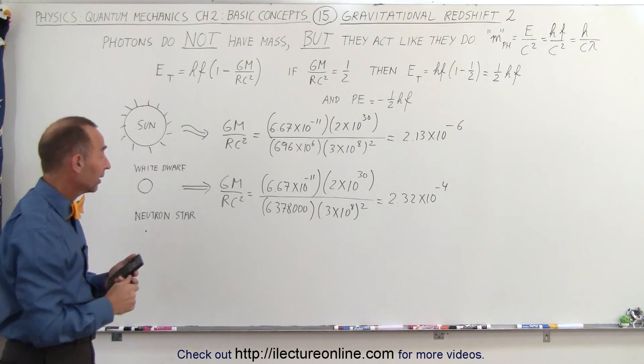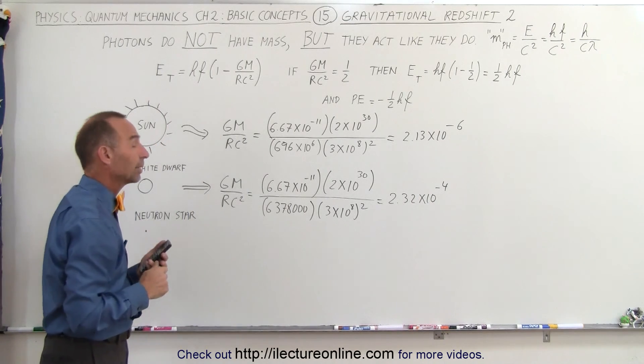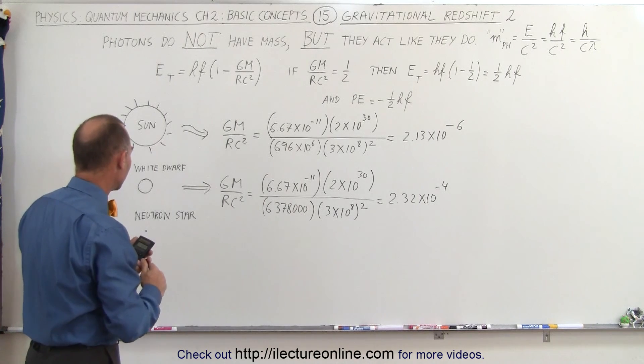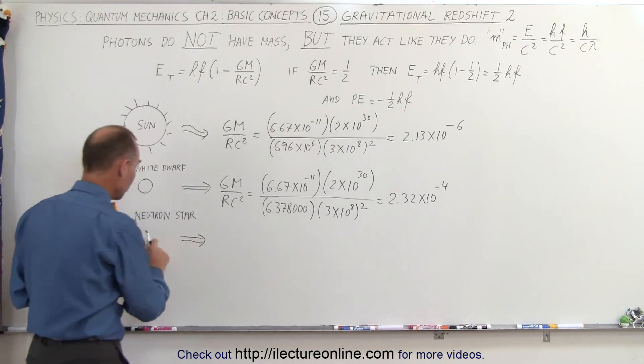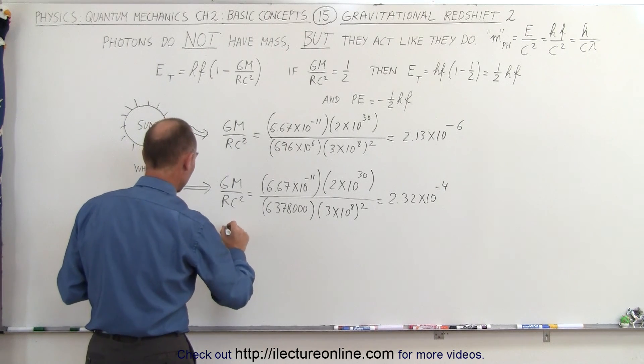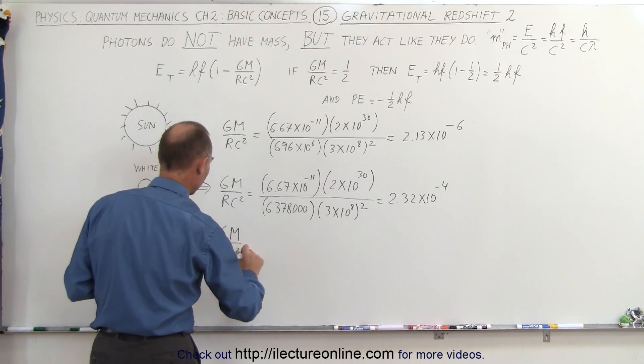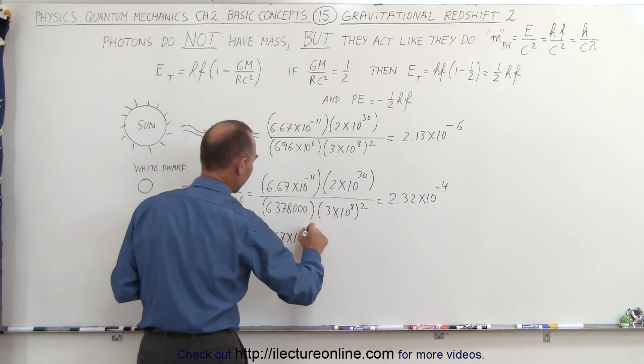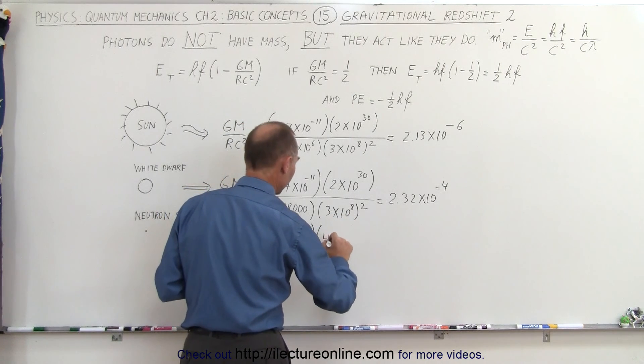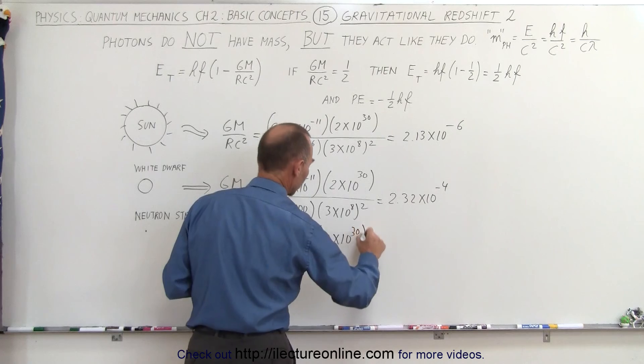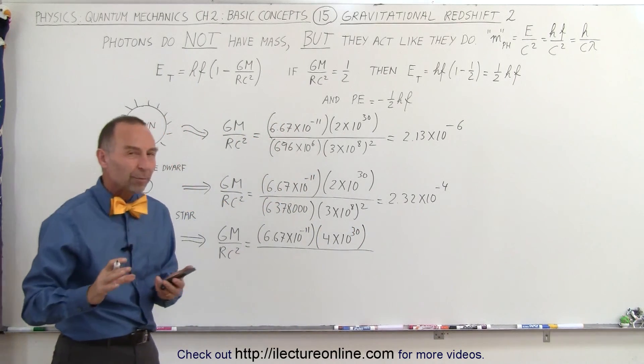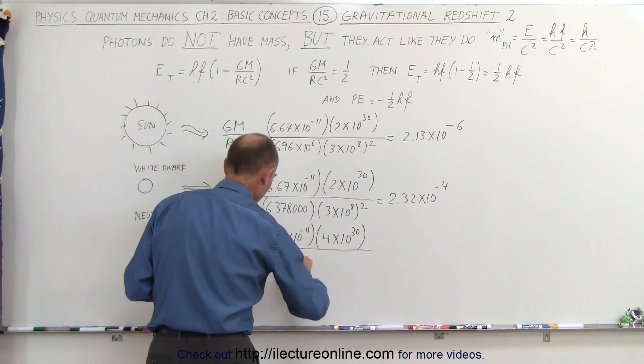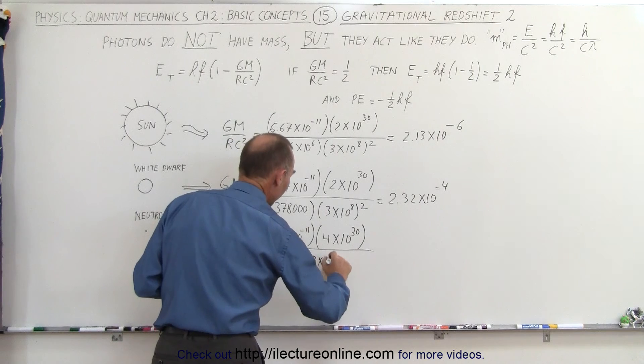Now let's try a neutron star with twice the mass of the sun, because neutron stars have a minimum mass of 1.4 times the mass of the sun, and much smaller radius. GM over RC squared for a neutron star would be 6.67 times 10 to the minus 11, twice the mass of the sun, 4 times 10 to the 30th, divided by a radius of about 10 kilometers or 10,000 meters, and the speed of light squared.